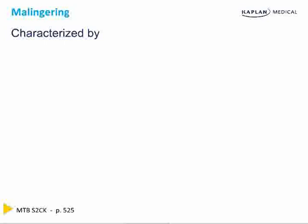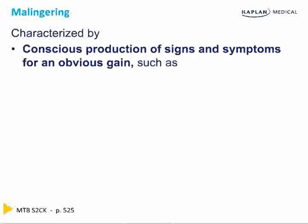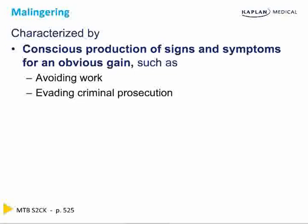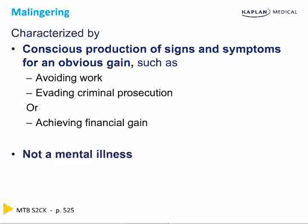Factitious disorder is different from malingering. Malingering is characterized by conscious production of signs and symptoms for an obvious gain — you want to avoid work, evade criminal prosecution, or achieve financial gain. A lot of times people will go on disability with nothing wrong with them but getting a monthly payment for being disabled secondary to a job injury. It's not a mental illness; this is conscious and active. These people know what they're doing and are trying to gain something — that's the difference between malingering and factitious disorder: there's an actual tangible gain.